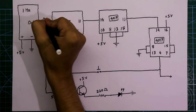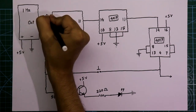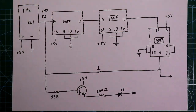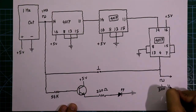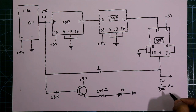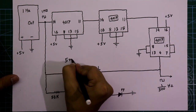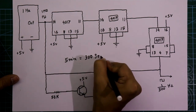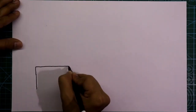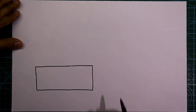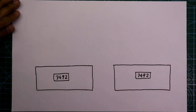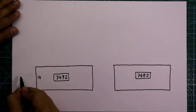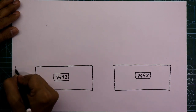At one point we get 1 Hz frequency, and at another point we get 1/300 Hz. It is designed to get 1/300 Hz because 5 minutes equals 300 seconds. For the next part we need two pieces of the 7492 IC.